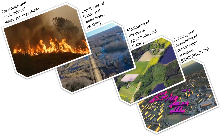About the themes that ministries had. The first one, prevention and eradication of landscape fires, was aimed at the needs of the Estonian Rescue Board, which is the responsibility of the Ministry of the Interior. Monitoring of floods and water levels — the information is important for the Estonian Rescue Board, but also for the Estonian Weather Service, which is the responsibility of the Ministry of the Environment. The third theme, monitoring of the use of agricultural land, was aimed at the needs of PRIA, the Agricultural Registers and Information Board, which is the responsibility of the Ministry of Rural Affairs.